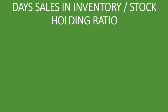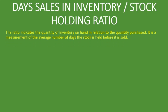Welcome to this lesson where we're going to look at day sales in inventory, or the stock holding ratio. We'll explain what it is, how to interpret or analyze the ratio, and go through an example. After this lesson, you should be able to not only calculate the ratio but also analyze it. The ratio indicates the quantity of inventory on hand in relation to the quantity purchased — it measures the average number of days stock is held before it is sold, calculated for a specific period.